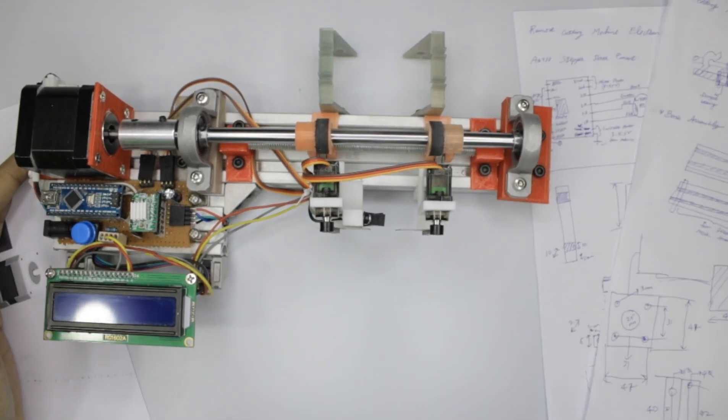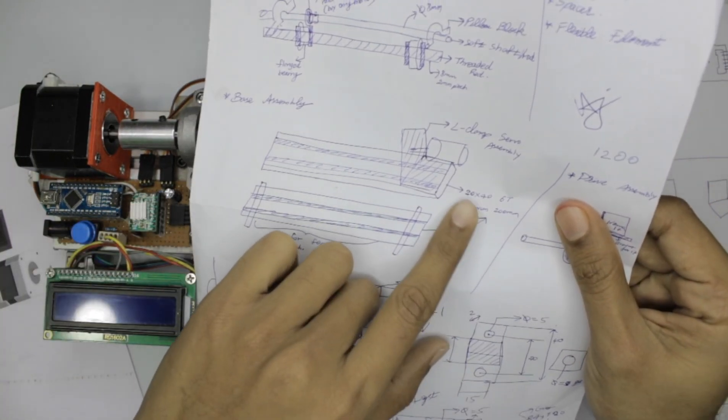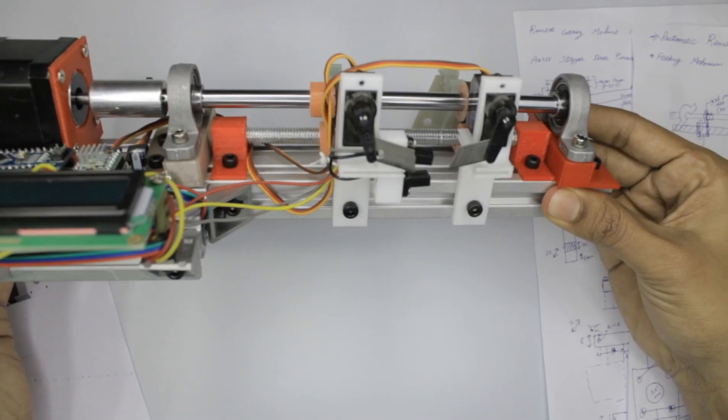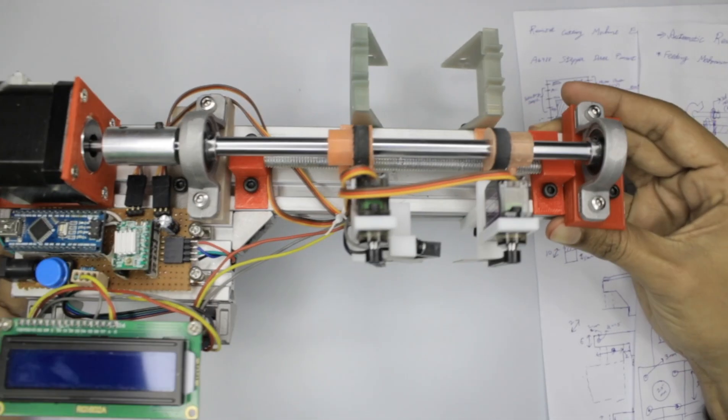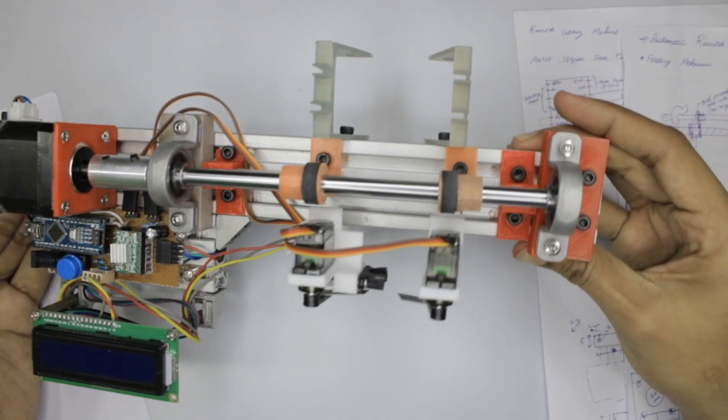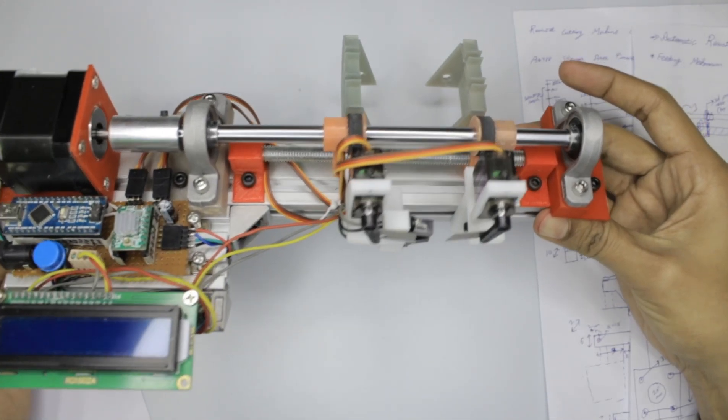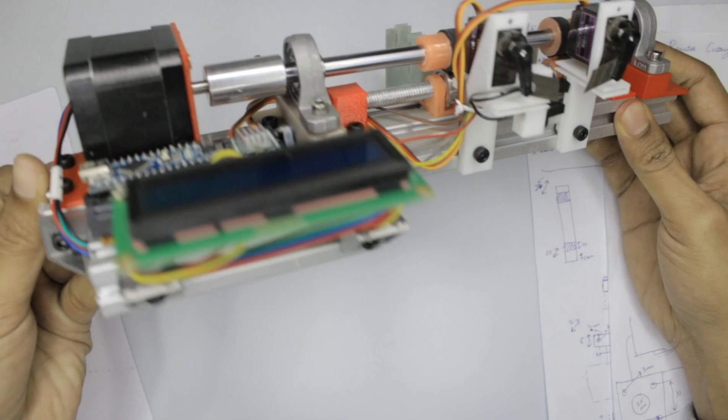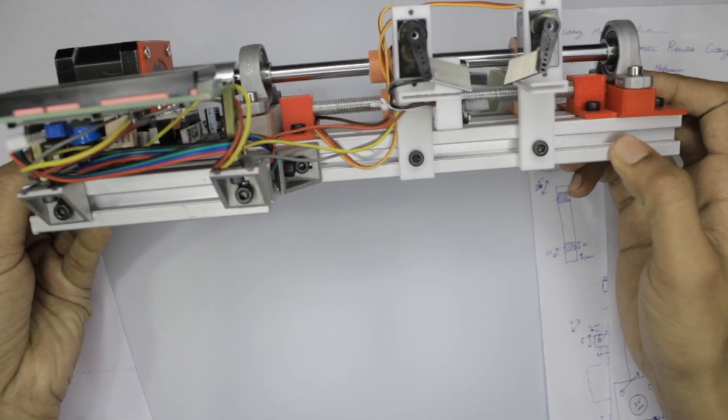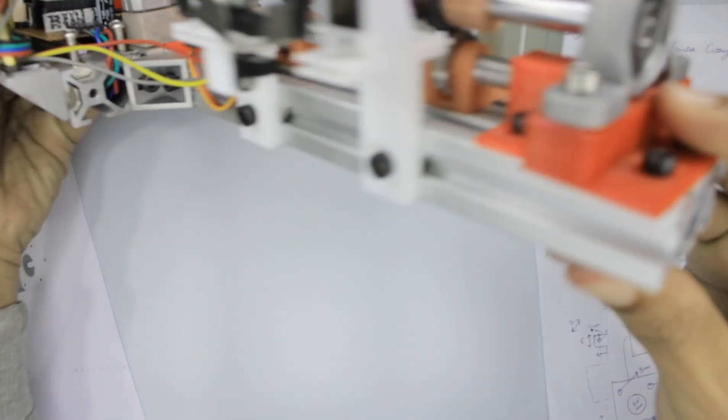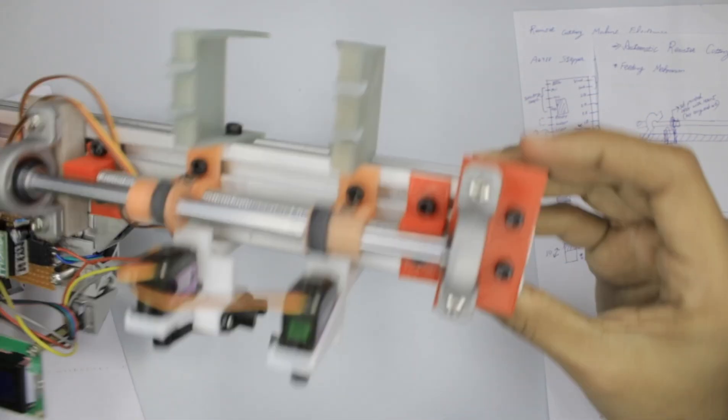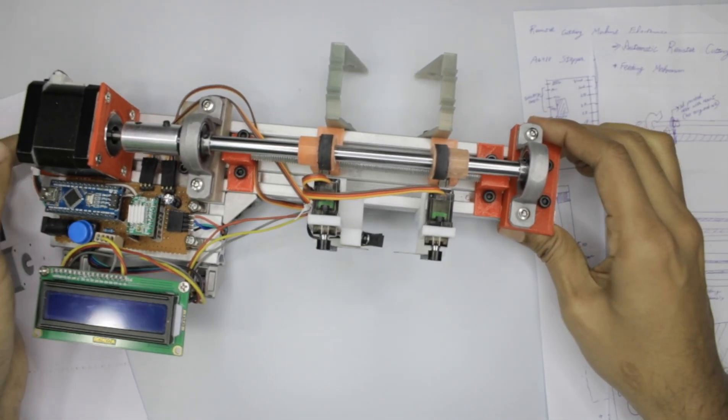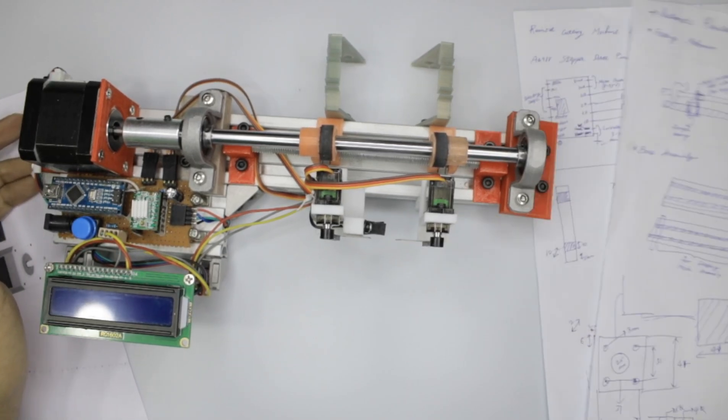I have used a 200mm aluminum bar - it is 20 by 40. The reason for using this aluminum is that it helps you to mount a lot of things onto it as well as gives a very sturdy platform. Everything on this cutting machine is assembled onto this aluminum using these grooves and the T nuts.